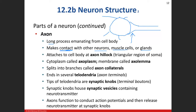Inside the axon, the cytoplasm is called axoplasm, and the plasma membrane along the axon is called the axolemma. Some axons have collaterals — branches that go off to either another neuron, a muscle cell, or a gland. At the very end of the axon, it splits into small little branches called telodendria, and at the ends of the telodendria are swellings called synaptic knobs or synaptic end bulbs, which is where we have our neurotransmitter.